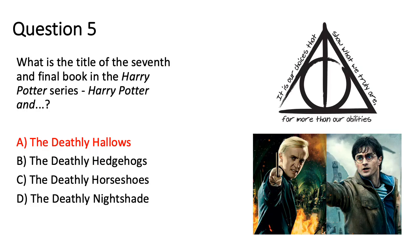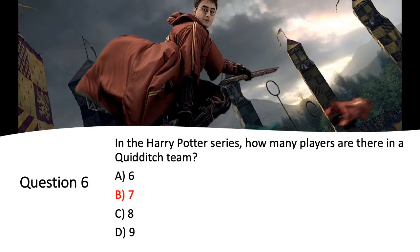Question five: the title of the seventh and final book in the Harry Potter series was Harry Potter and the Deathly Hallows. The final question in this round: how many members were there on a Quidditch team? It is seven — you would have three chasers, one keeper, two beaters, and one seeker who would be in charge of catching the snitch.